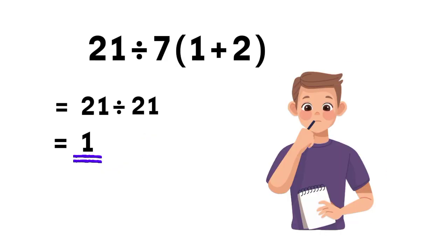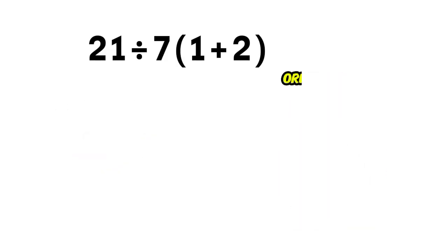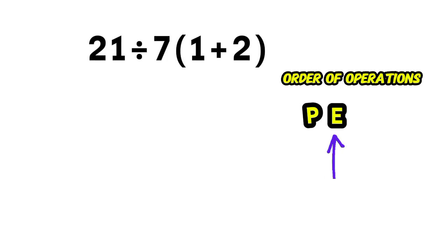Here's why. To solve this expression correctly, we follow the order of operations. Parentheses come first, then exponents, then multiplication and division from left to right, and finally addition and subtraction from left to right.